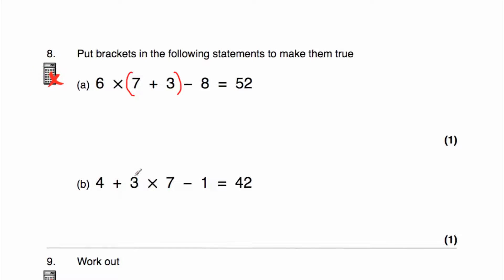Question 8b: put brackets in 4 plus 3 multiplied by 7 take away 1 to get the correct answer. Without brackets: 3 times 7 is 21, 4 plus 21 is 25, take away 1 is 24 — too small. Trying (4 plus 3): 7 times 7 is 49, take away 1 is 48 — too big. So bracket both (4 plus 3) and (7 take away 1): 4 plus 3 is 7, 7 take away 1 is 6, and 7 times 6 is 42. We need two pairs of brackets.